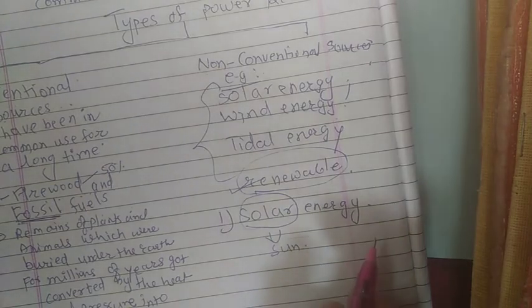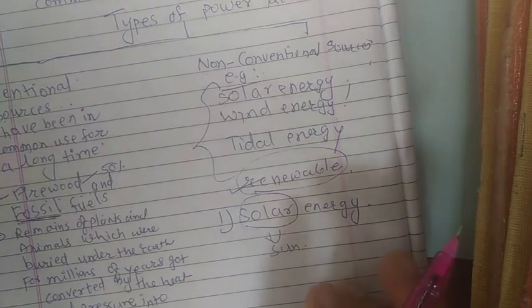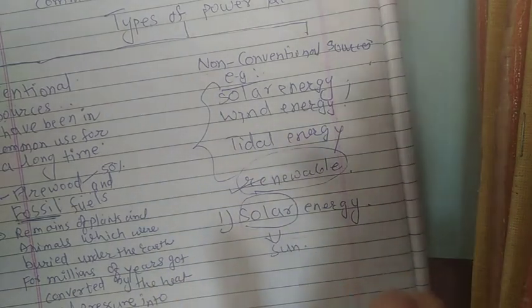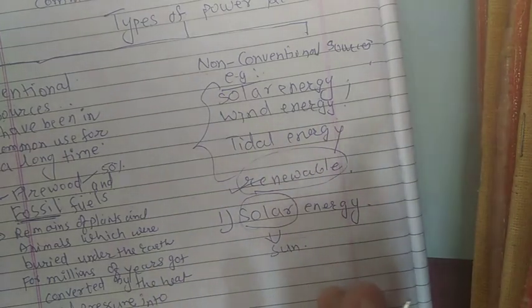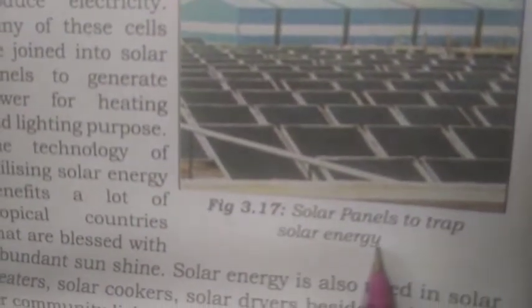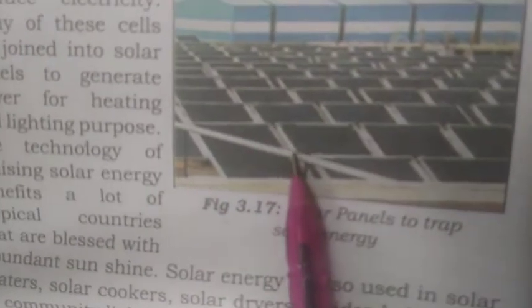The sun's heat and light can be felt every day. We can trap energy from the sun and convert it into solar energy. Solar panels are used to capture solar energy and generate electricity. Many solar cells are joined into solar panels to generate power for heating and lighting.